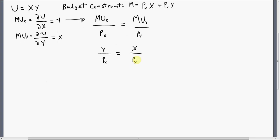The next thing we're going to do is simplify this. We're going to solve it for Y. Solving for Y, we get Y equals the price of good X divided by the price of good Y, times X.